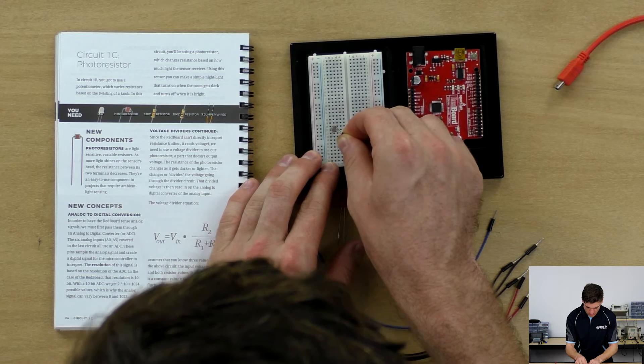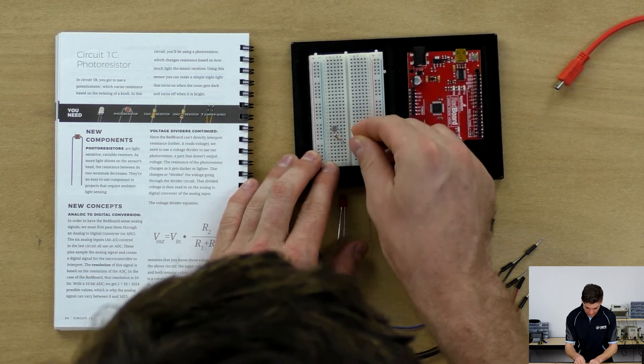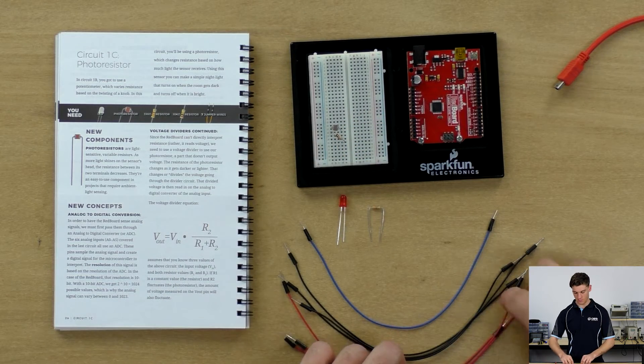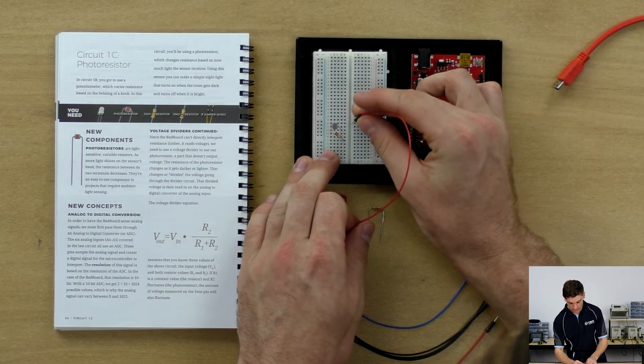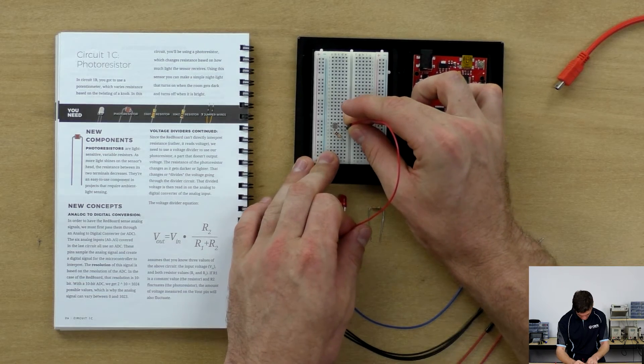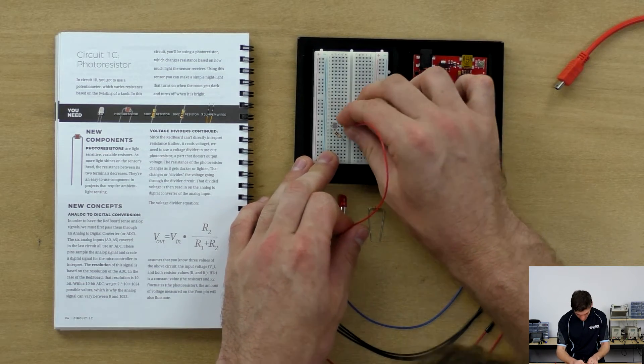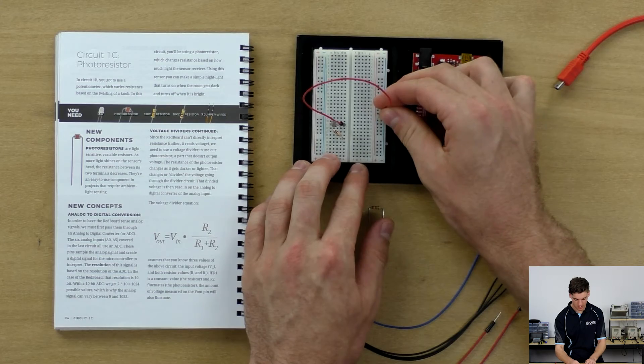Then we're going to connect the red lead, the power, to E21 to the positive power rail.